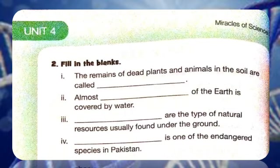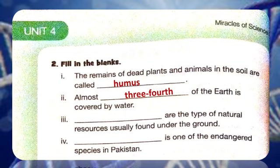Question number two is fill in the blanks. Number one: the remains of dead plants and animals in the soil are called humus. Number two: almost three fourths of the earth is covered by water. Number three: minerals are the types of natural resources usually found under the ground. Number four: markhor is one of the endangered species in Pakistan.